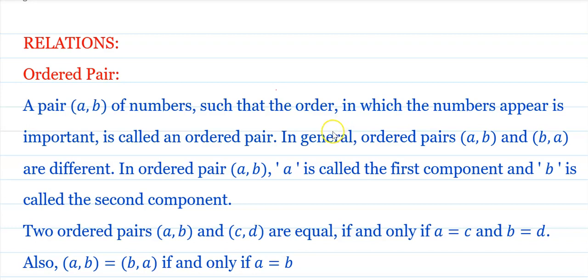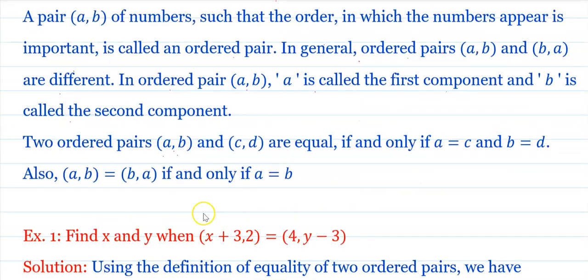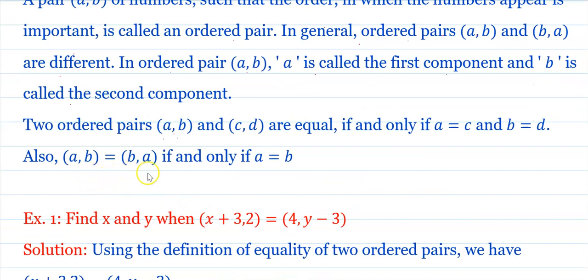Hello friends, in this video I will explain Exercise 1.2, all the questions. But before that, some basic terms. First: ordered pairs. A pair (a, b) of numbers such that the order in which the numbers appear is important is called an ordered pair. In general, ordered pair (a, b) and (b, a) are different. In ordered pair (a, b), a is called the first component and b is called the second component. Two ordered pairs (a, b) and (c, d) are equal if and only if a = c and b = d. Also, (a, b) = (b, a) if and only if a = b.